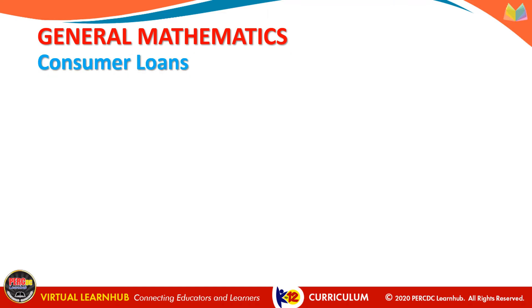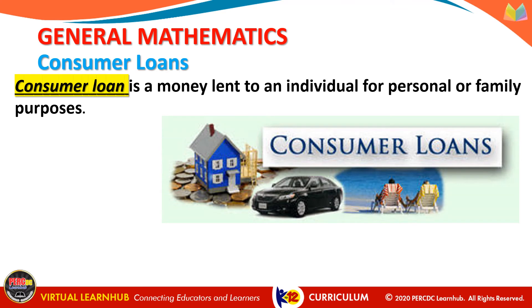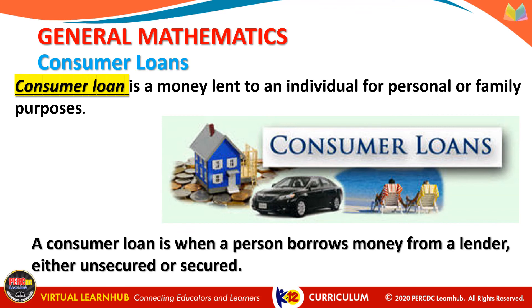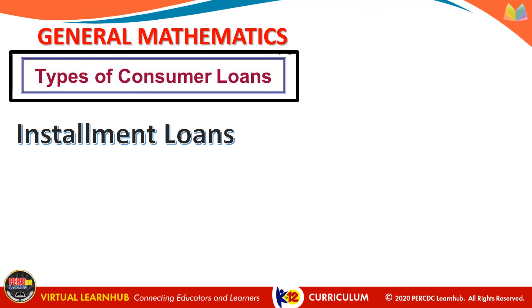Let us now discuss consumer loans. A consumer loan is a loan given to consumers to finance specific types of expenditures. In other words, a consumer loan is any type of loan made to a consumer by a creditor. The loan can be secured, backed by the assets of the borrower, or unsecured, not backed by the assets of the borrower. Some of the most popular types of consumer loans include mortgages, refinances, home equity lines of credit, credit cards, auto loans, student loans, and personal loans.